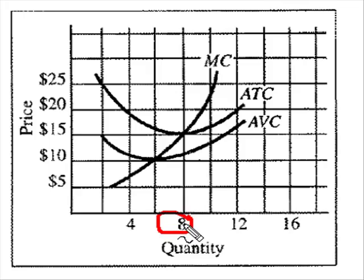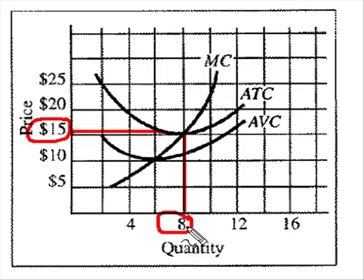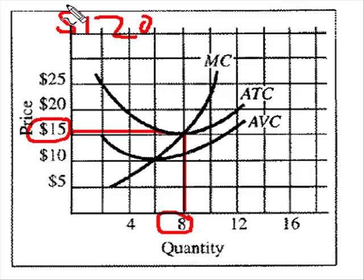Now let's ask a follow-up question. What's the firm's approximate total cost when average total cost is minimized? Take this output level, go up until you hit the ATC, come over, so you can identify the ATC, which of course is 15. The question asked though the total cost, and of course total cost of production would be 15 times 8, which would give us $120 worth of total cost of production.